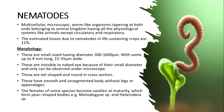These are invisible to the naked eye because of their small diameter and can only be seen under the microscope. They are eel-shaped and round in cross-section, with a smooth unsegmented body without appendages. The females of some species become swollen at maturity — these are sedentary nematodes that take on a pear-shaped body. Species belonging to this group include Meloidogyne species and Heterodera species.